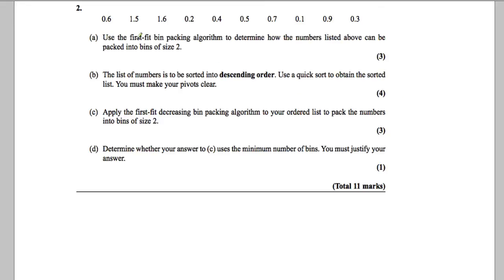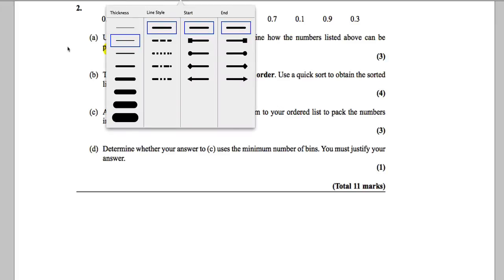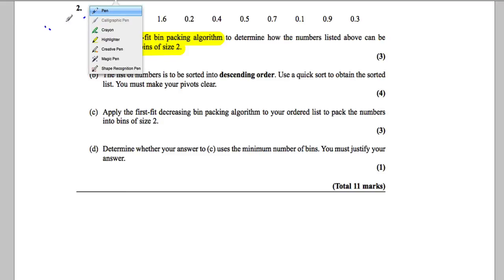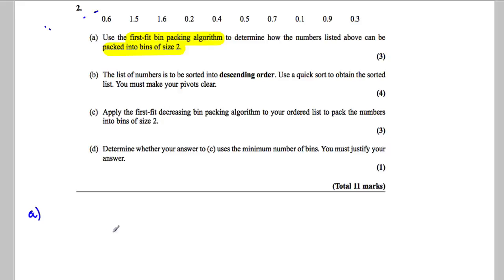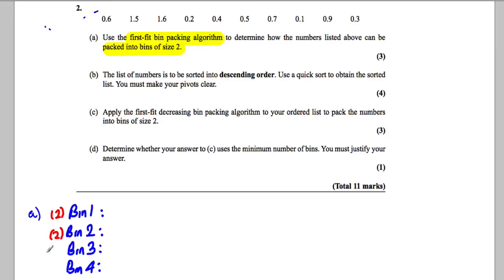Question two: we're told to use the First Fit bin packing algorithm to determine how the numbers listed above can be packed into bins of size two. I'm going to list the bins — bin one, bin two, bin three, bin four. I don't know how many bins I'm going to need, but I can always rub extras out. Each bin is of size two, so I'll put a two in brackets to remind me how big each bin is.